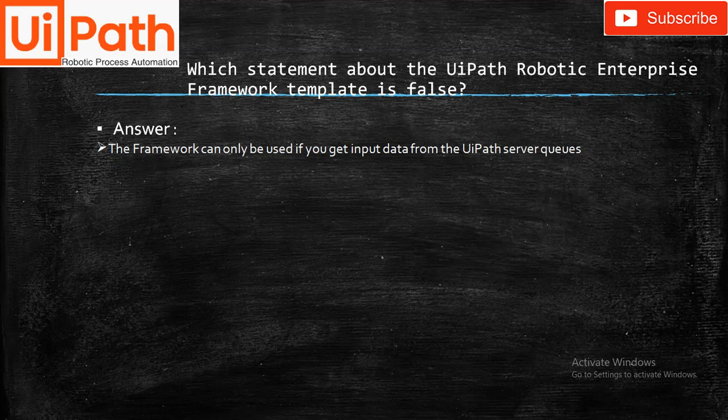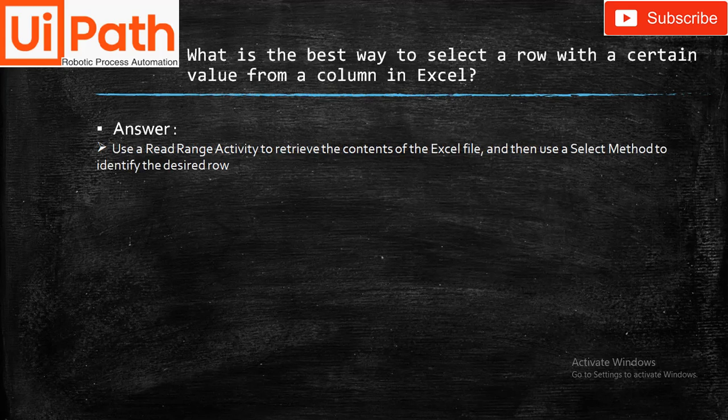Which statement about the UiPath Robotic Enterprise Framework template is false? The framework can only be used if you get input data from the UiPath server queues. What is the best way to select a row with a certain value from a column in Excel? Use the Read Range activity to retrieve the content of the Excel file, and then use a Select method to identify the desired row.